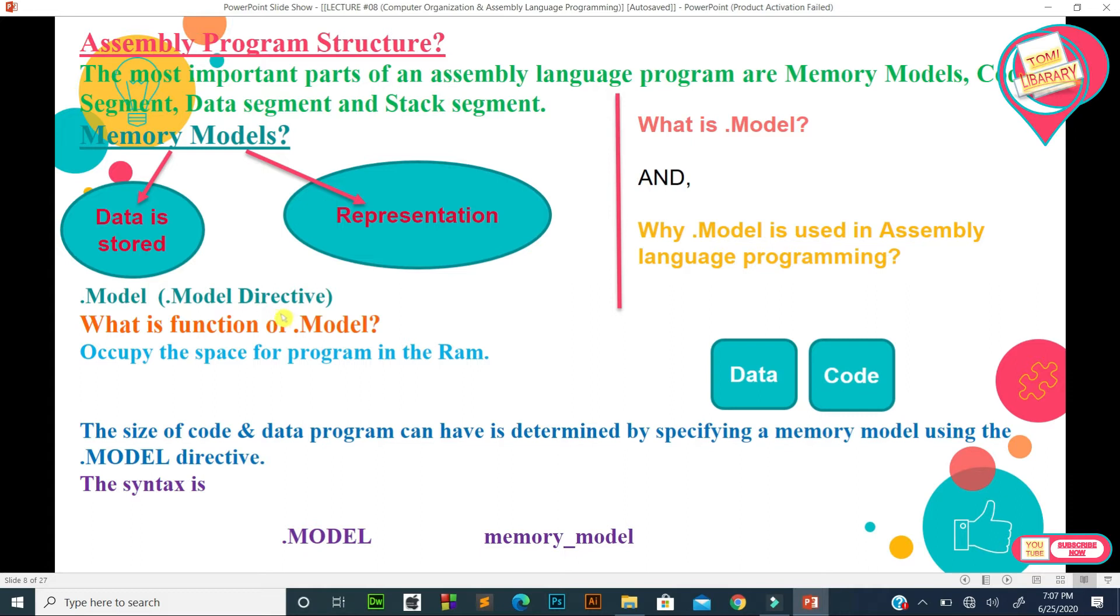Basically, by writing .MODEL, we tell the processor how much space the program we are creating will occupy in the RAM. So the function of .MODEL is to occupy the space for program in the RAM. We tell the RAM how much space is required for data and for code. The size of code and data program can have is determined by specifying a memory model using the .MODEL directive. The syntax is: .MODEL memory_model.